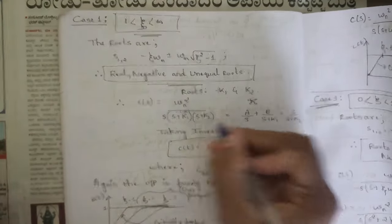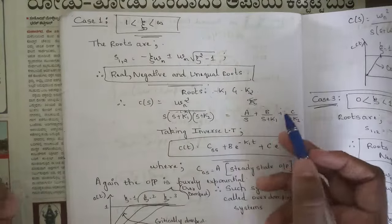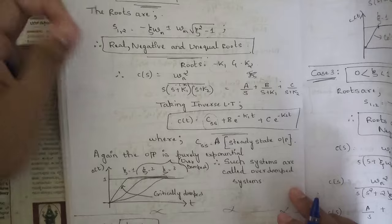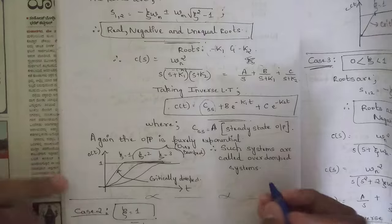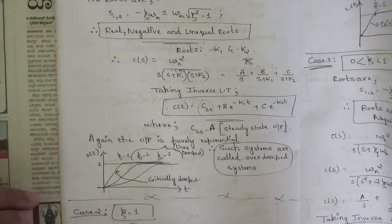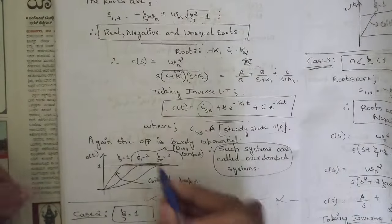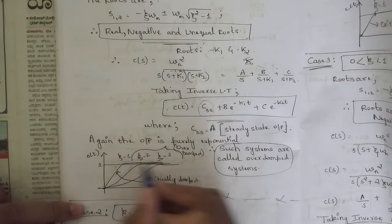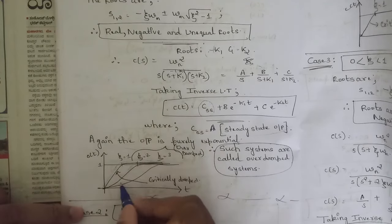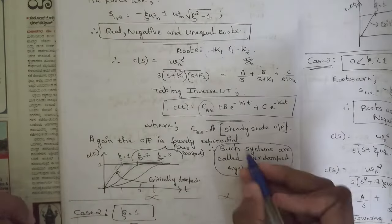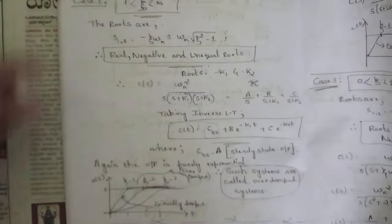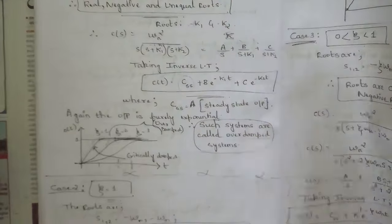The steady-state output here is A, and the response is purely exponential. Such systems are called over-damped systems. The graph shows the output rising and reaching amplitude 1 and becoming constant, with different curves for different zeta values from 1 to infinity. Whenever the value of zeta lies between 1 and infinity, the response obtained is over-damped.